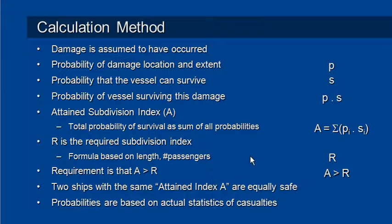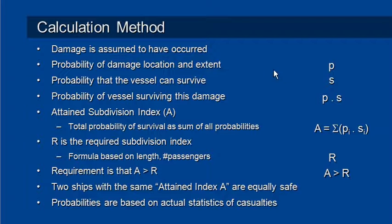The basic approach to the calculation of probabilistic damage stability is that we assume that damage has occurred in a certain location in the vessel, and we calculate the probability of that damage occurring based on its location and its extent or length. That probability is P. Given that particular damage, we then calculate the probability that the vessel can survive, and that probability is S.